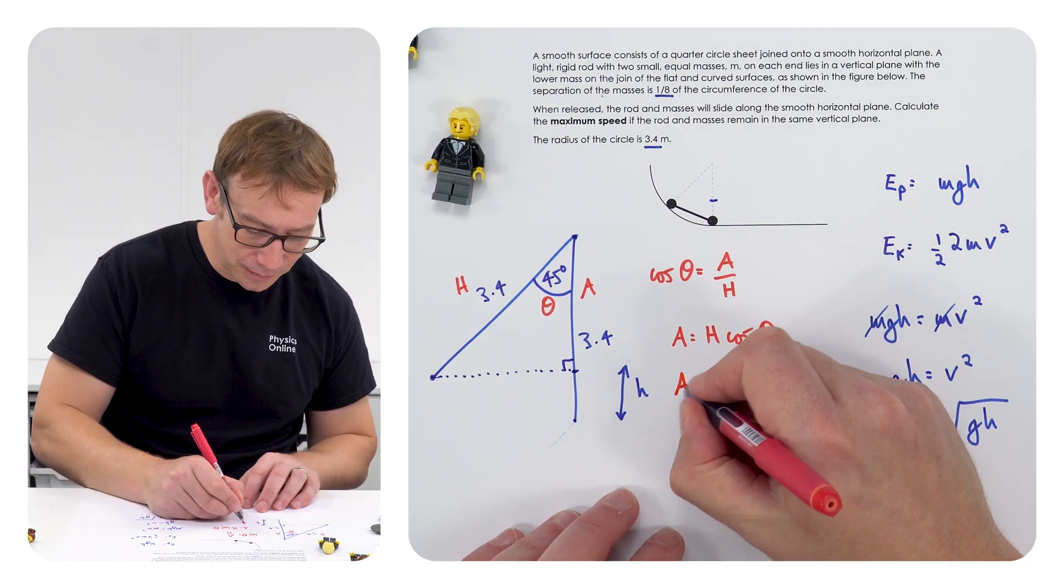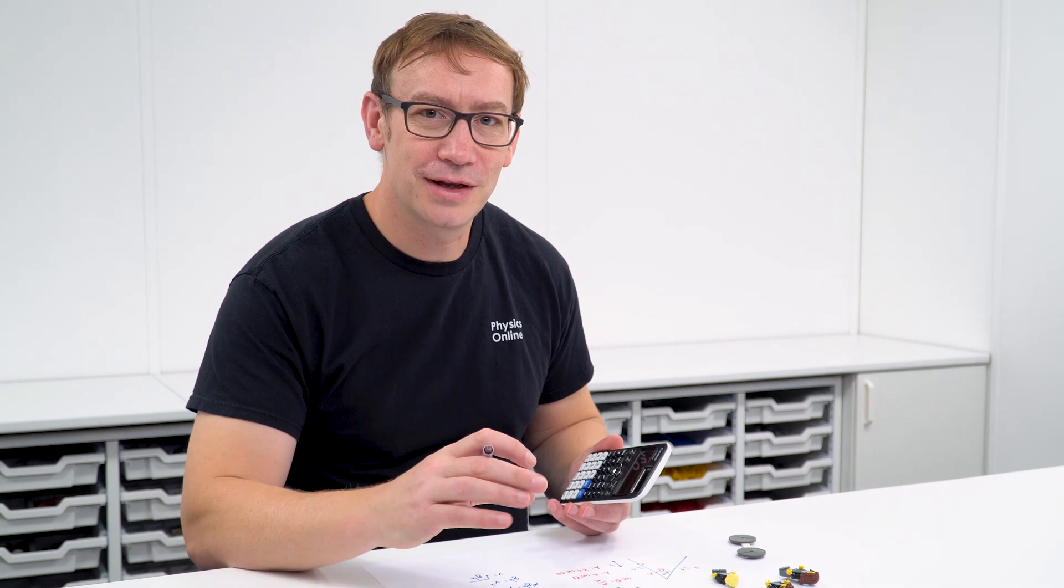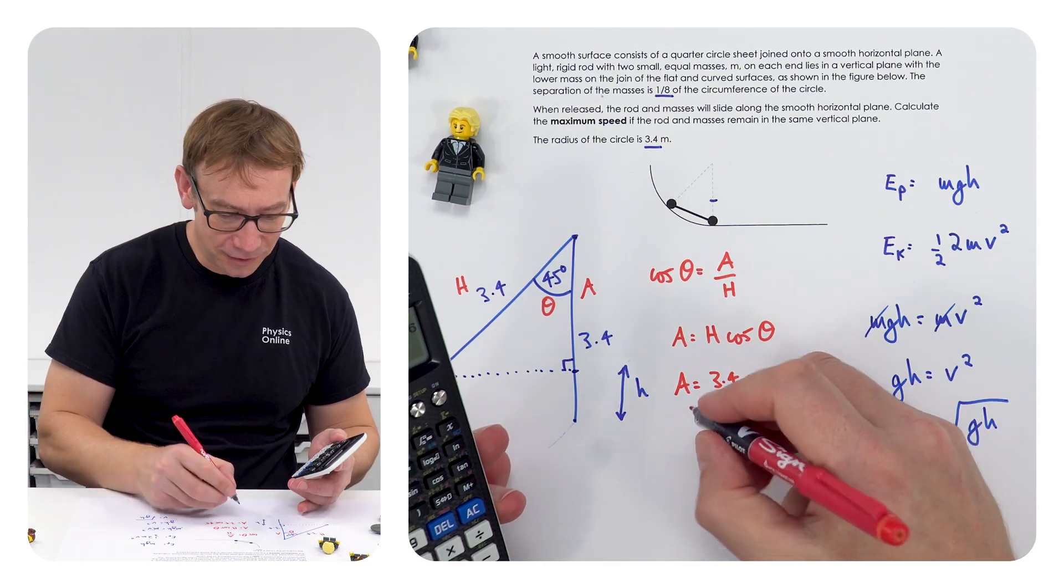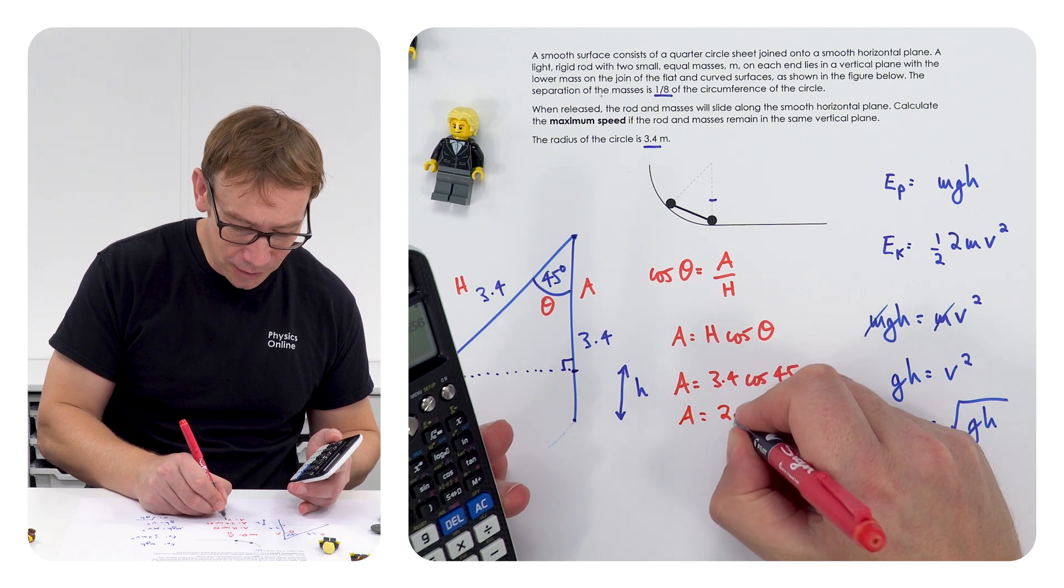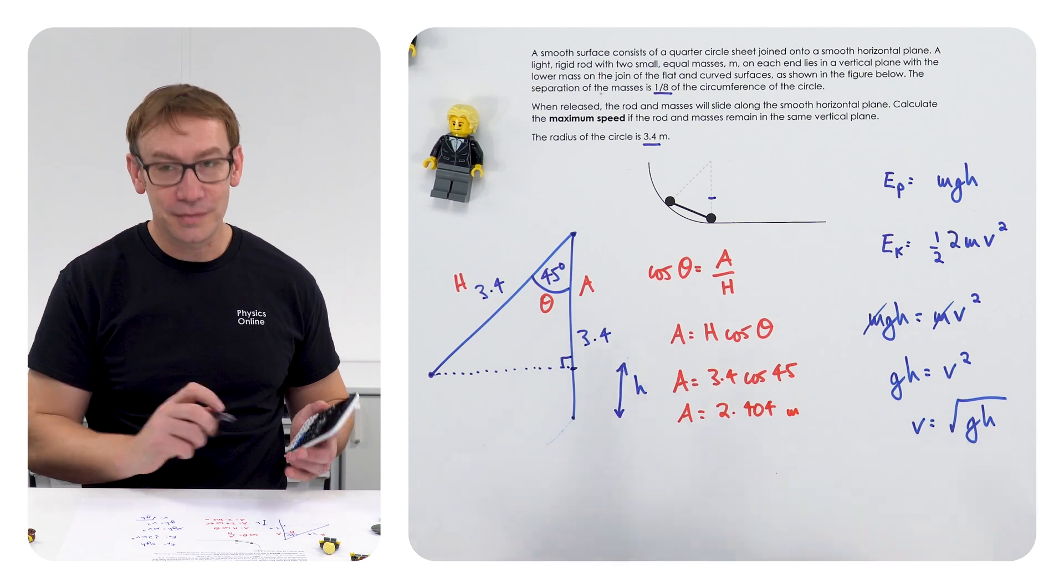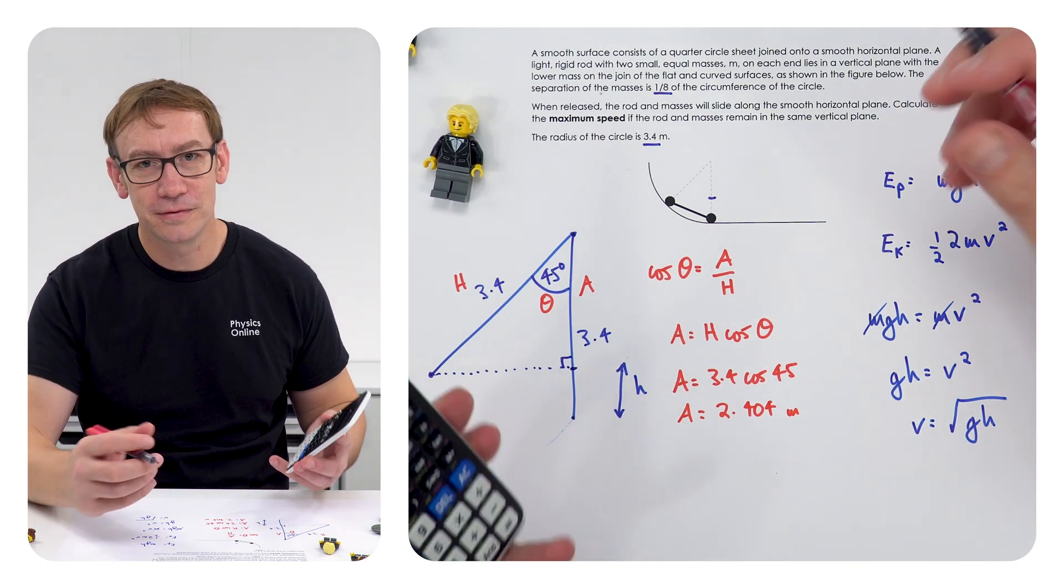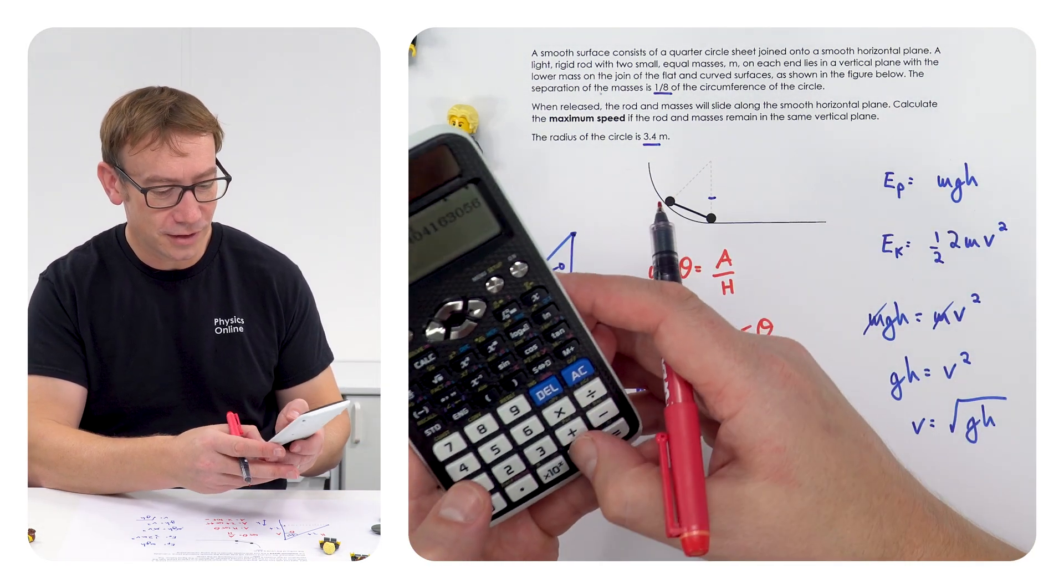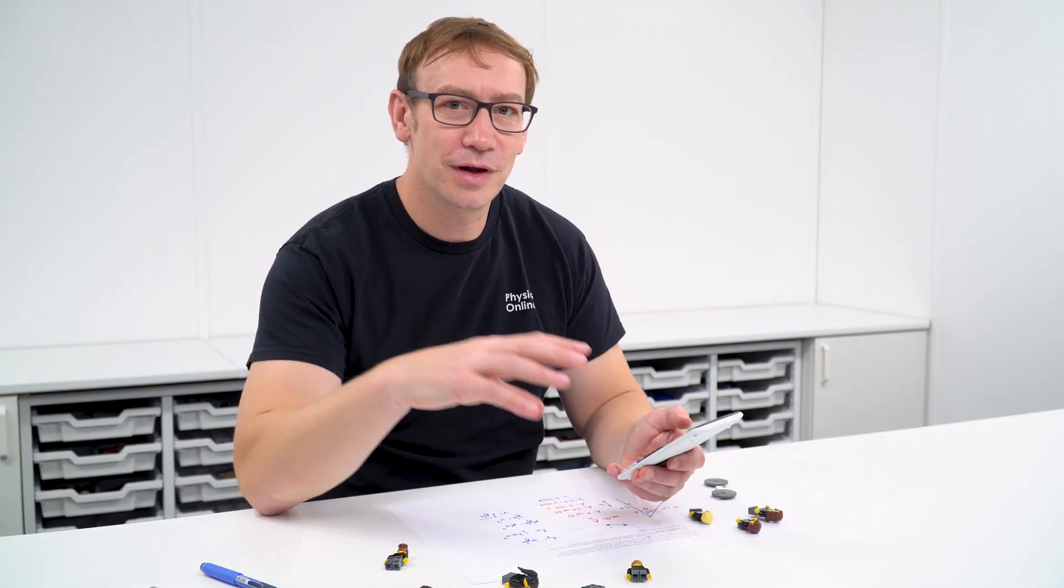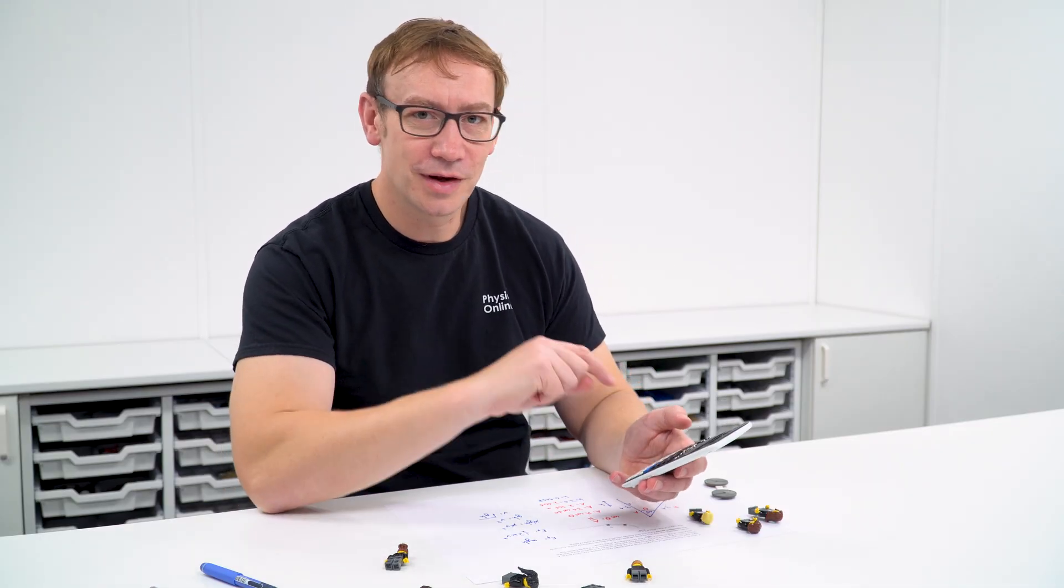We can put some numbers in. Of course always making sure that your calculator is set to degrees rather than radians for this, and we find that this equals 2.404 of a meter. Okay so that means the height is equal to 3.4, the radius, take away this value which is 0.9958. And just to make sure that I'm not rounding down too early I'm going to keep this number in the calculator.